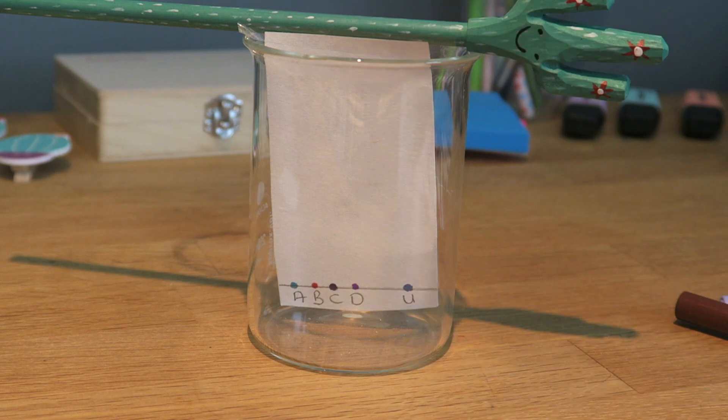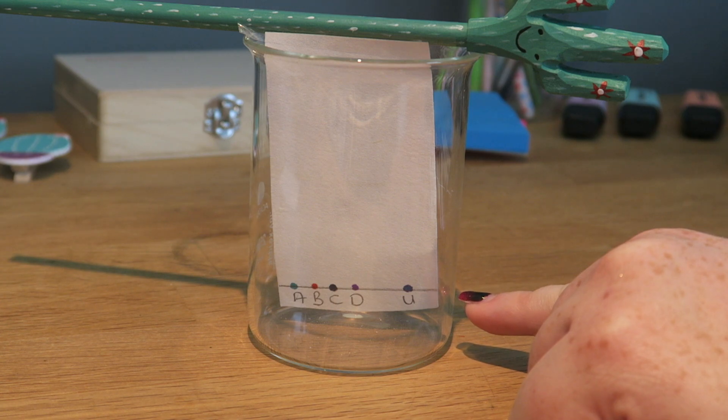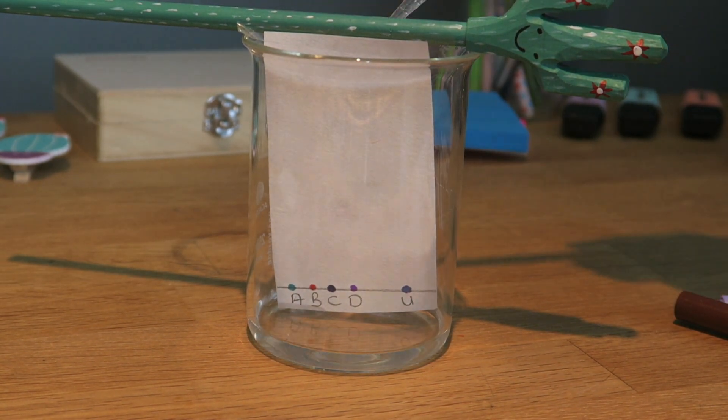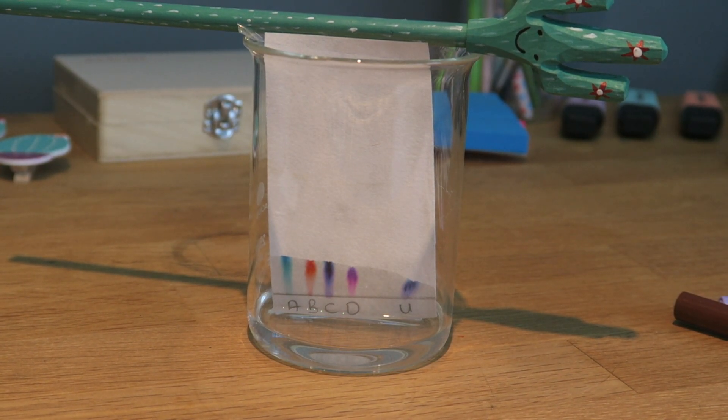I can put that in there and I'm just going to add some solvent so that it is just at the bottom of the paper. We can now watch the colours run up and when it's finished try and work out what the unknown sample is made of.